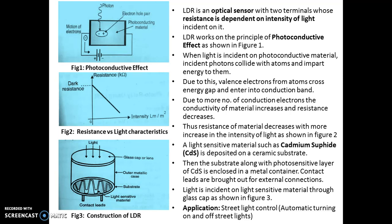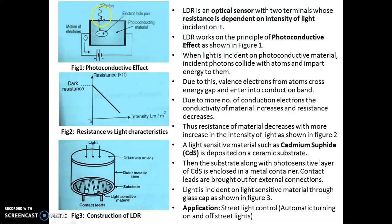LDR works on the principle of photoconductive effect as shown in figure 1. When light is incident on photoconductive material, these incident photons collide with atoms and impart energy to them. Due to this, valence electrons from atoms cross the energy gap and enter into the conduction band. Due to more number of conduction electrons, the conductivity of the material increases and resistance decreases.